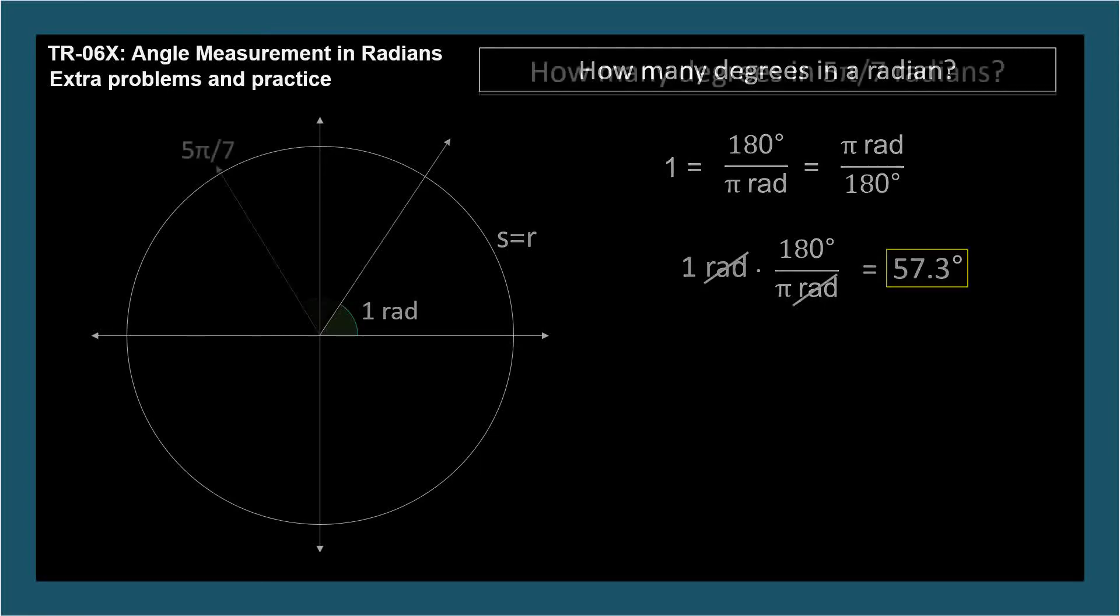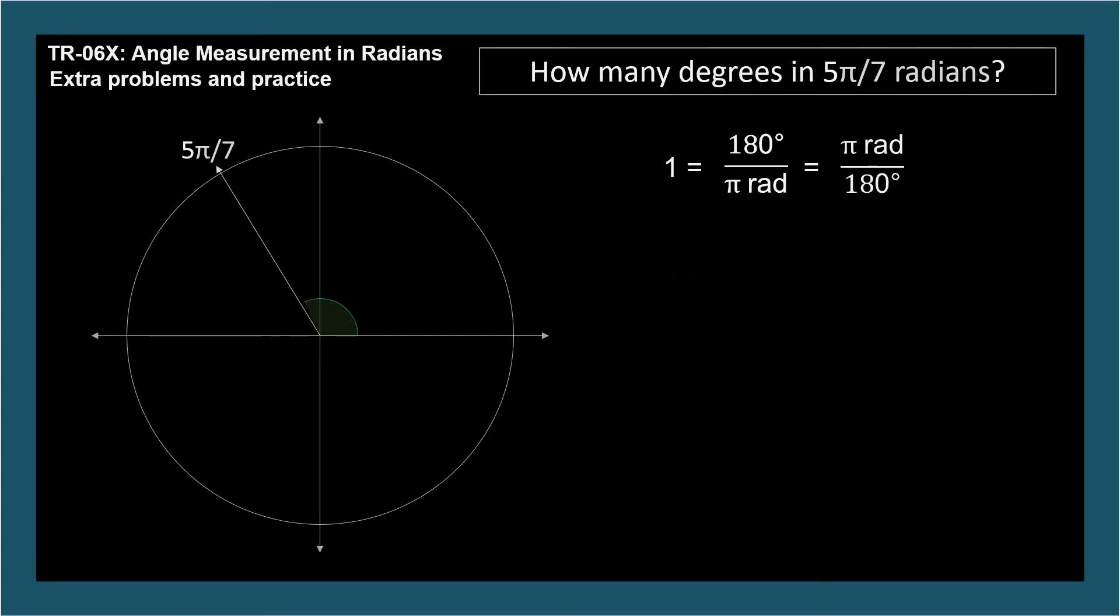How many degrees in 5π over 7 radians? This isn't one of our standard angles, so there's no reason we'd have this one memorized. So we'll use a conversion formula. Which factor do we use? 5π over 7 is in radians, so we want radians in the denominator, so they cancel out. We'll multiply by 180 degrees over π radians. The answer is approximately 129 degrees.